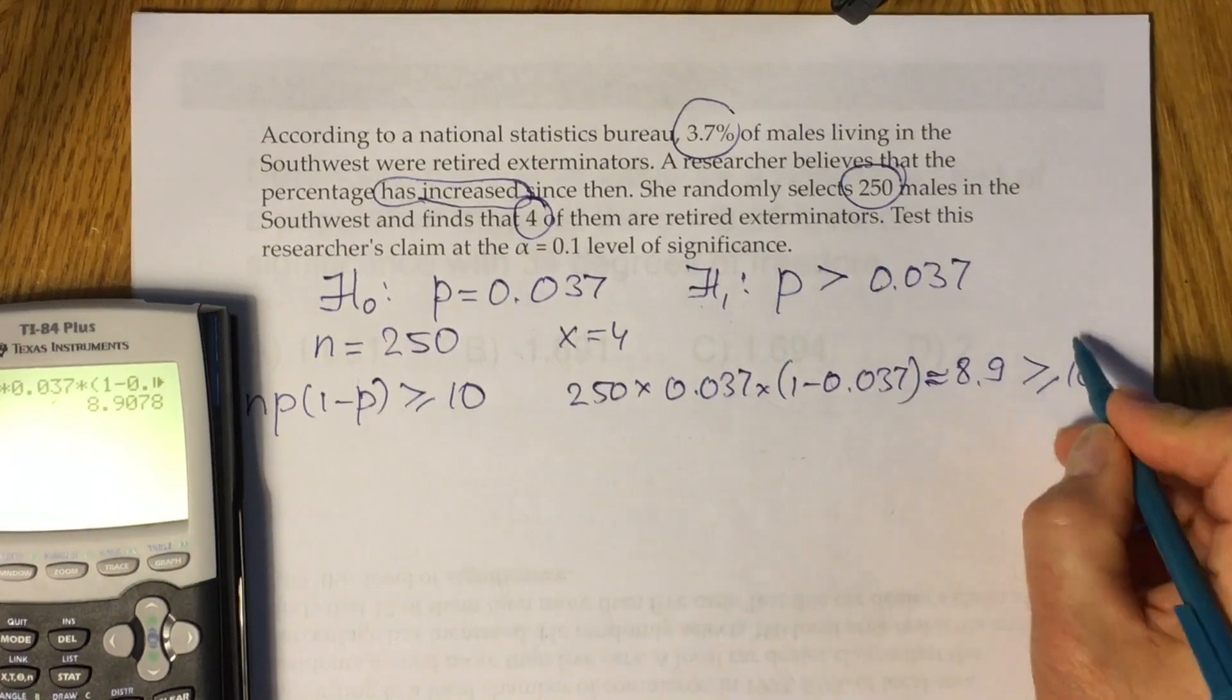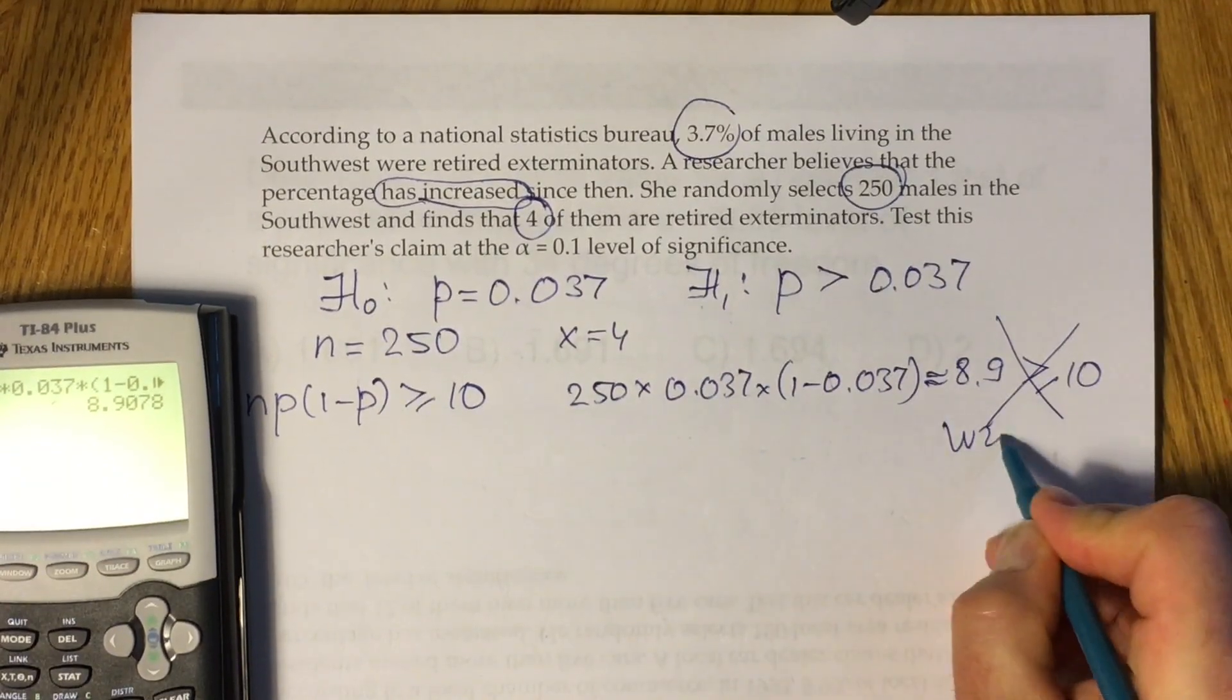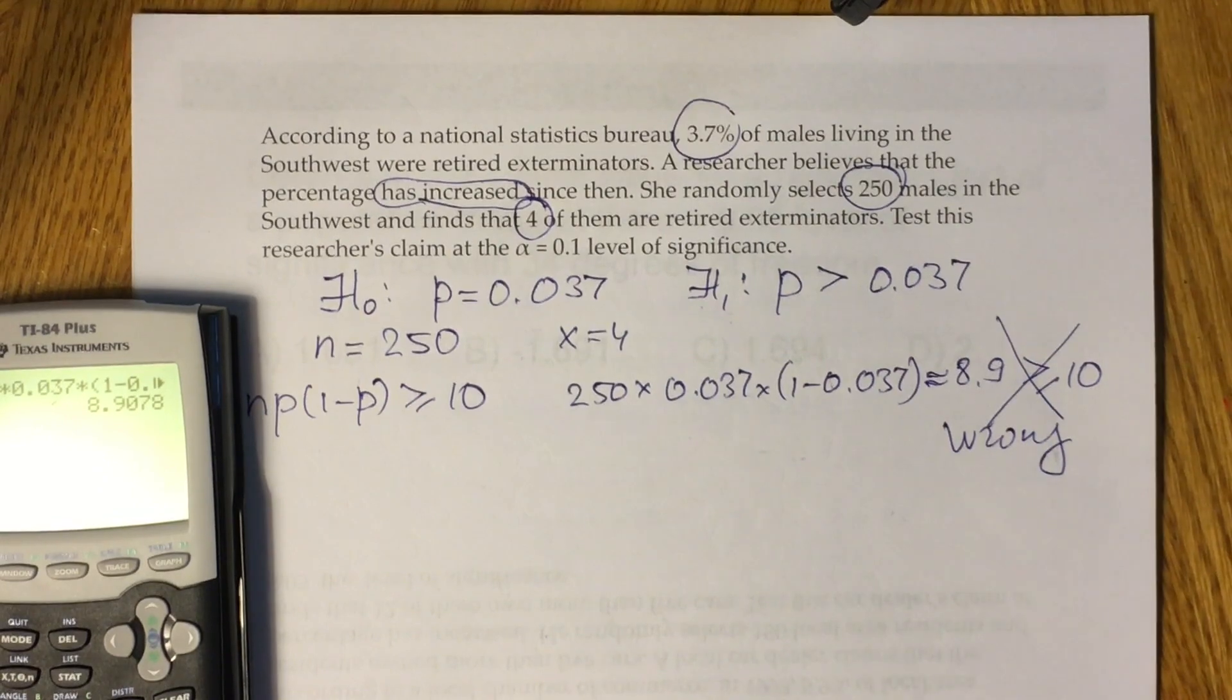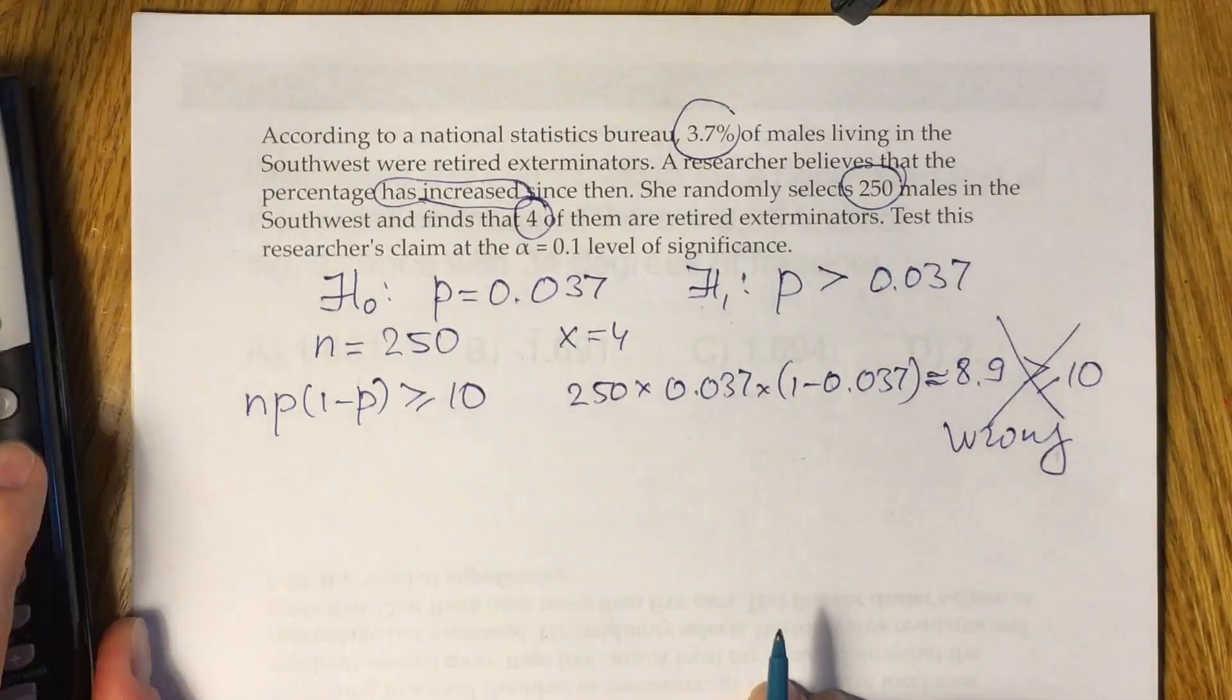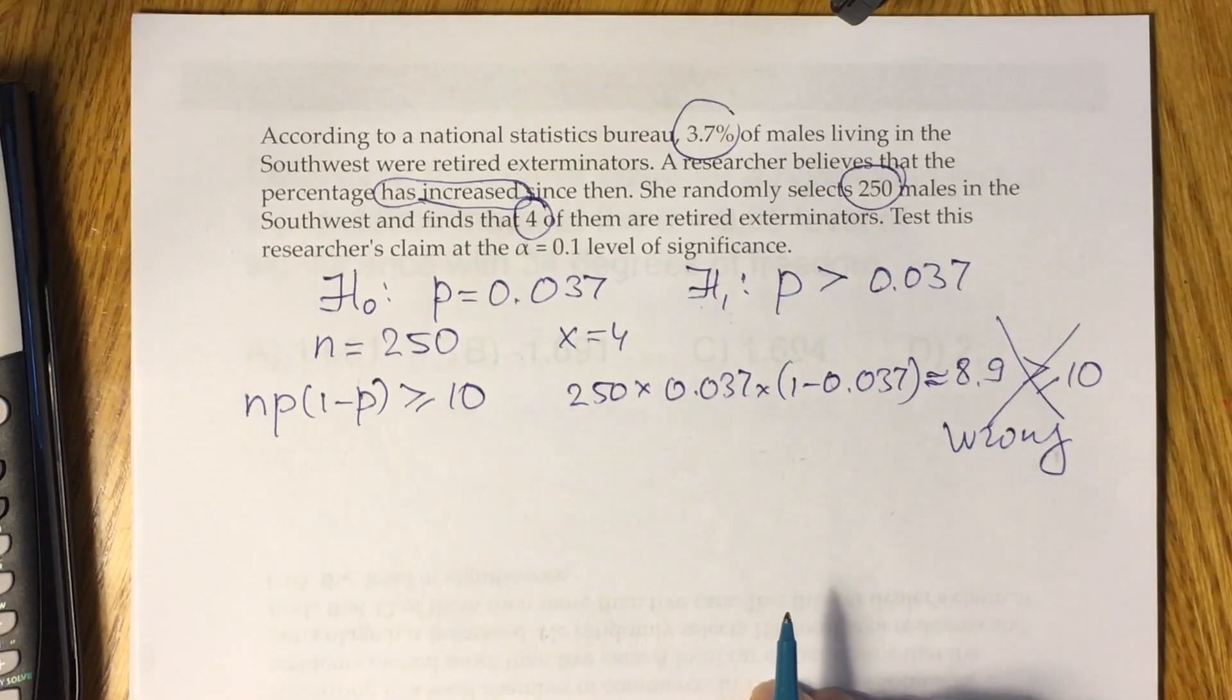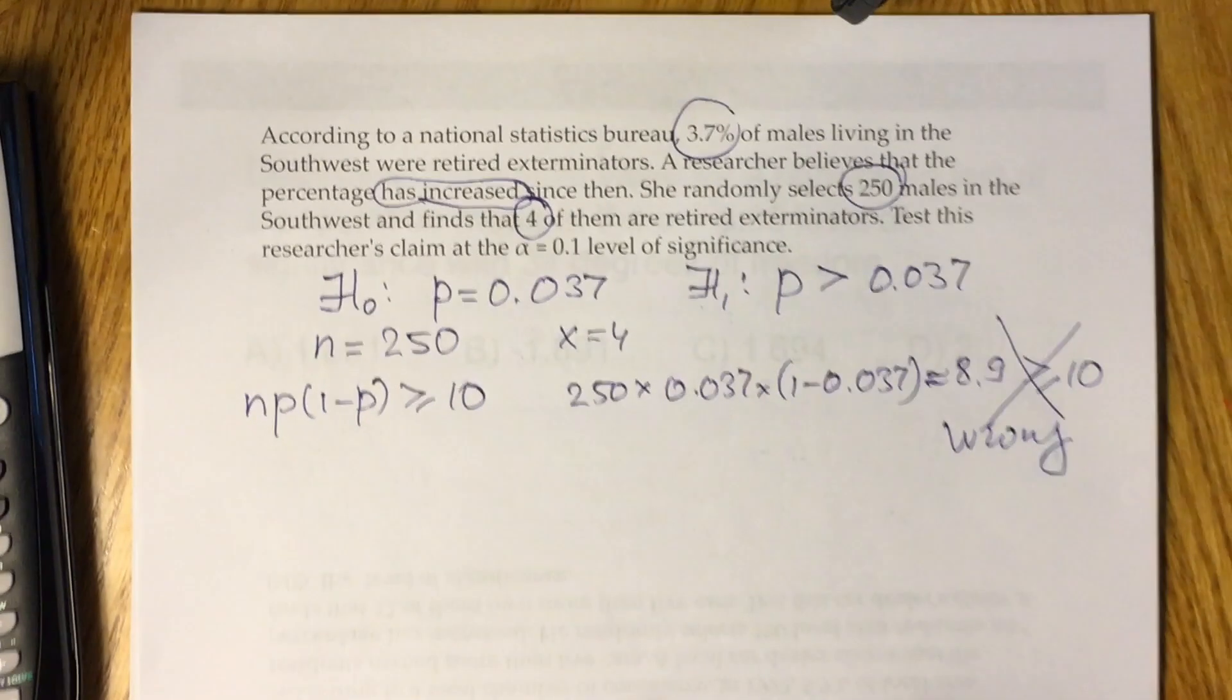You compare this with 10, clearly this is wrong. This is a false statement. So we cannot use one prop z test and we have to use binomial probability distribution. According to the book, according to the PowerPoints...